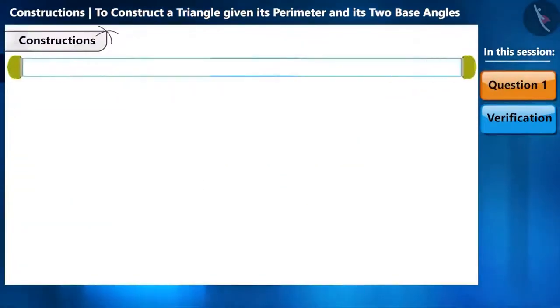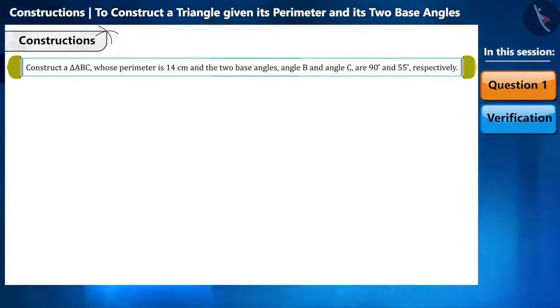So let's start with a question. Construct a triangle ABC whose perimeter is 14 cm and the two base angles, angle B and angle C, are 90 degrees and 55 degrees respectively.